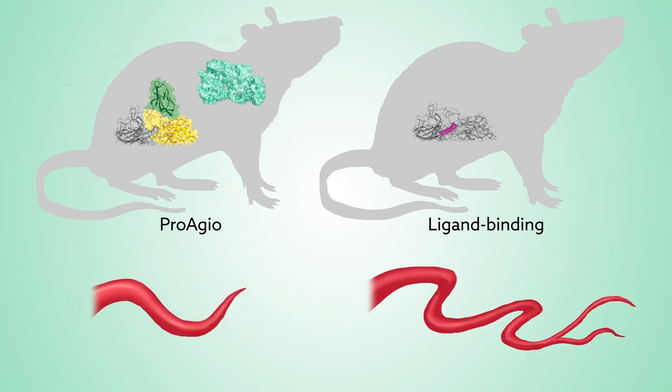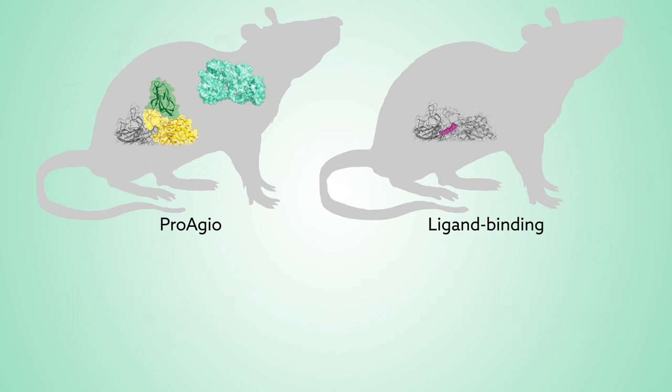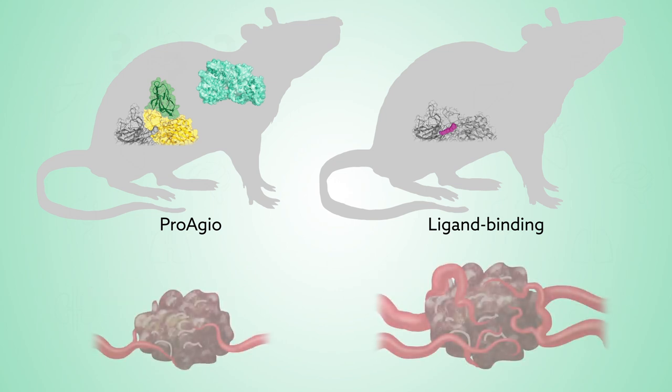It's this ability to cut off the supply of blood that also makes ProAgyos more effective in stopping the growth of tumors.